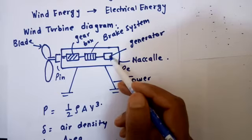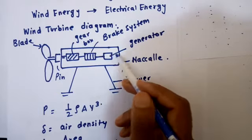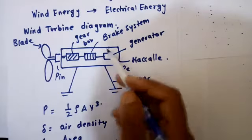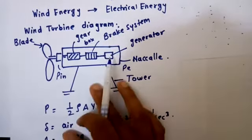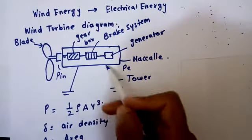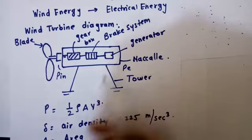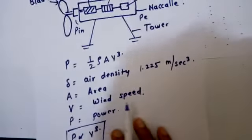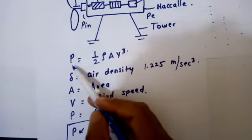This is all about the diagram, and here is the supporting tower. Now we'll see the expression of power. The expression for power of wind energy is equal to P = 1/2 ρAV³.